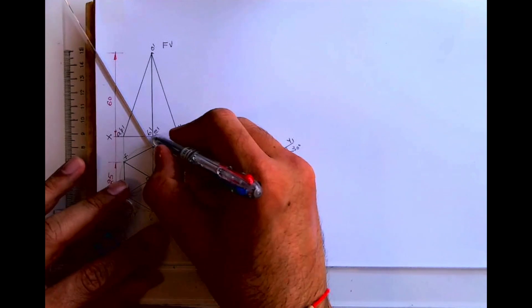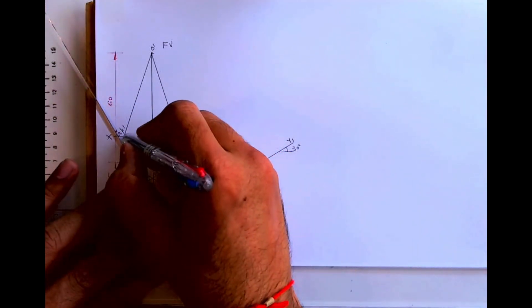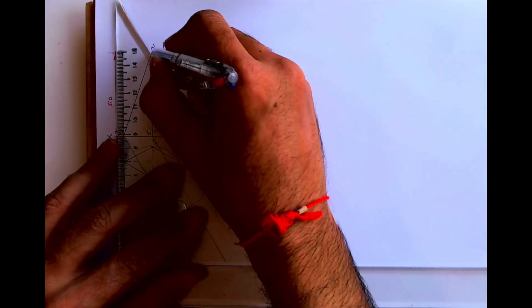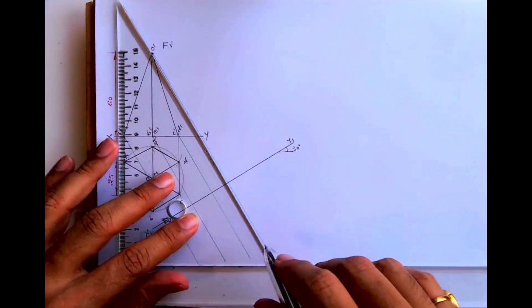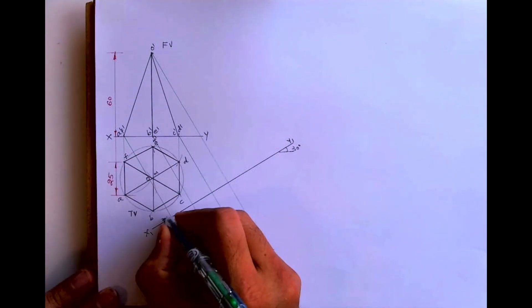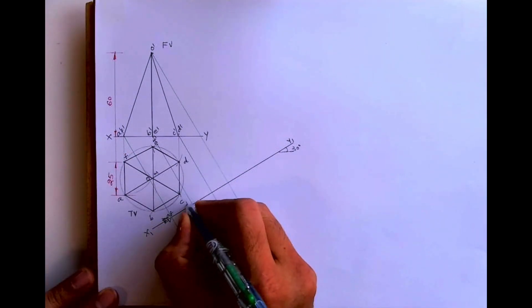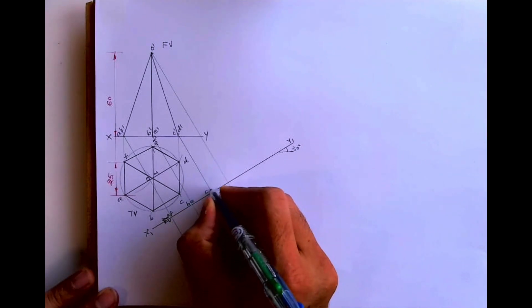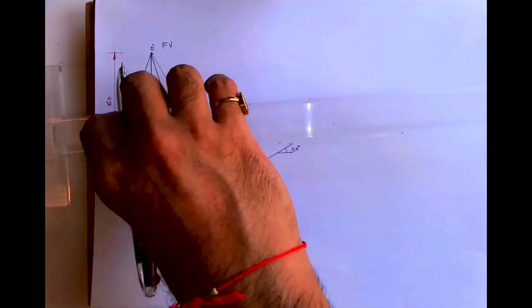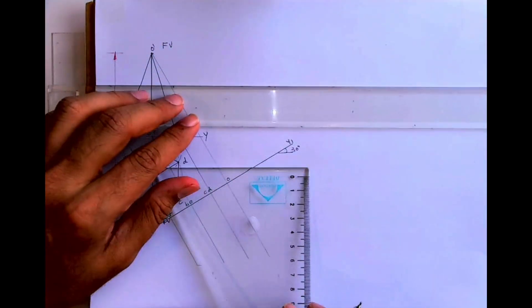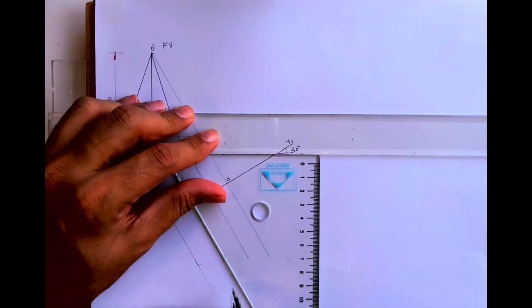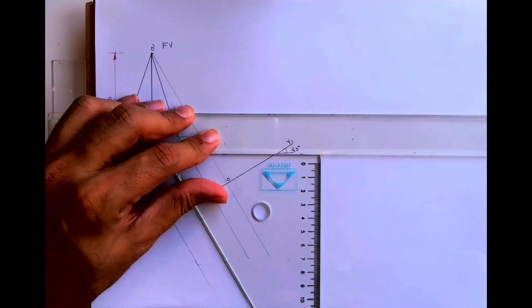Mark points B-dash, E-dash, A-dash, F-dash, and O-dash. These correspond to points A, F, B, E, C, D, and O. Now I'm just extending these lines.